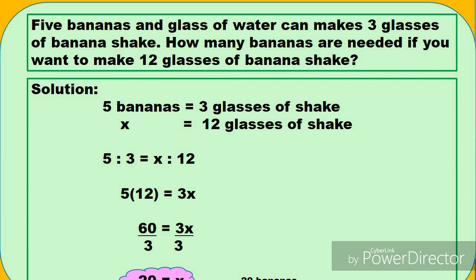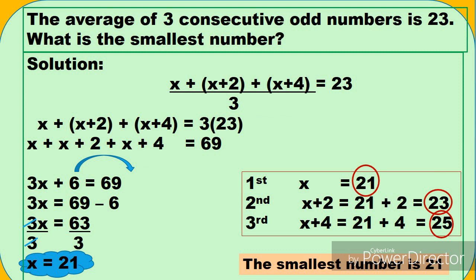And then, imumultiply natin yung extreme. 5 times 12 equals 60. And then yung means, 3 times X equals 3X. So 5 times 12 is 60, and then we have 3X.